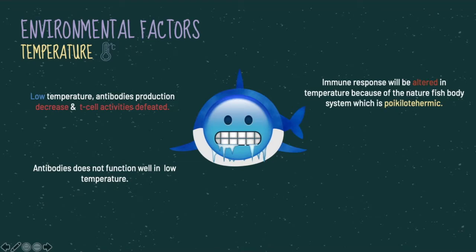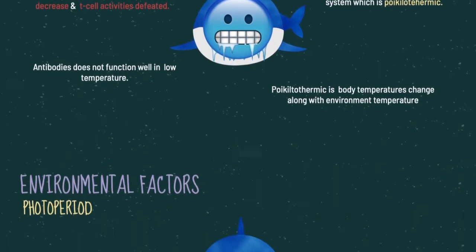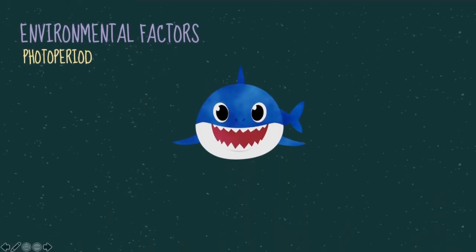Fish are poikilothermic, which is defined as having a body temperature that changes along with the environmental temperature. Another environmental factor is photoperiod.